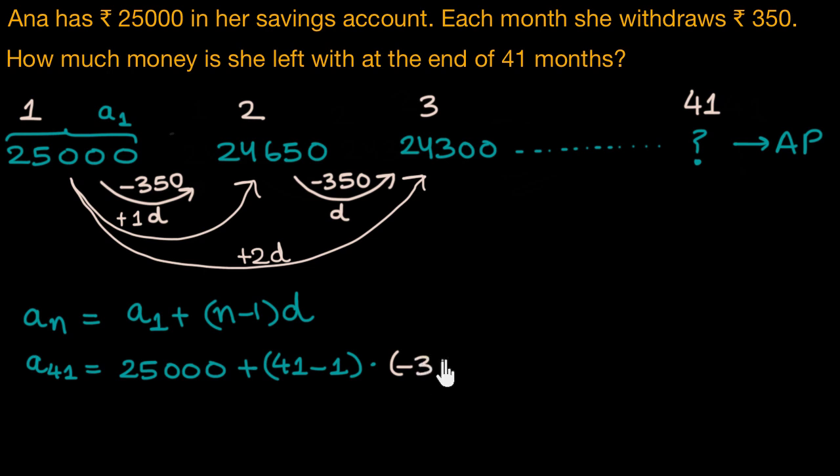So, I'll write negative 350 in that place. So, let's simplify this to figure out how much money Anna has remaining in her account. So, this would simplify to 25,000 plus 41 minus 1 is 40 times negative 350.